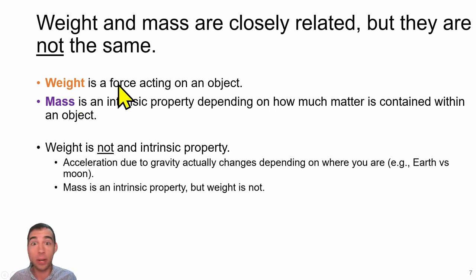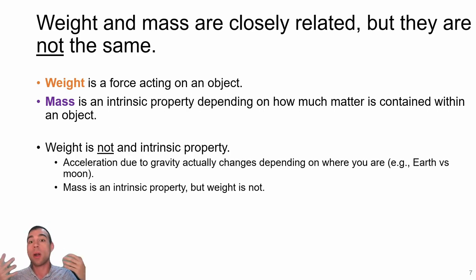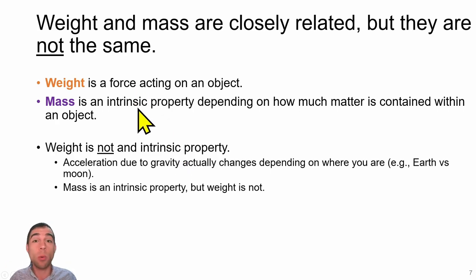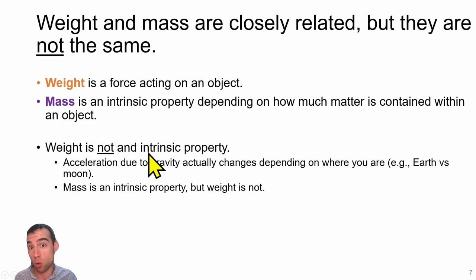Weight is a force — it's another name for the gravitational force. But mass is an intrinsic property that any object has whether you're on earth or on the moon; it's how many kilograms of stuff are inside an object. Whereas mass is the same anywhere in the universe, weight depends on the gravitational field you're present in, so weight might be stronger on earth than on the moon.